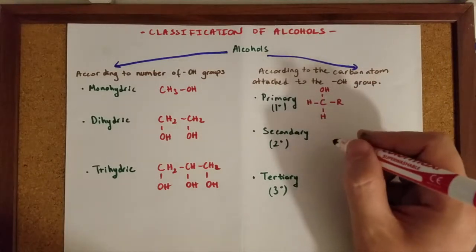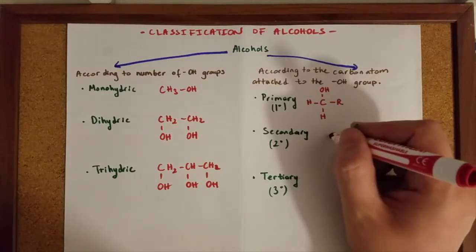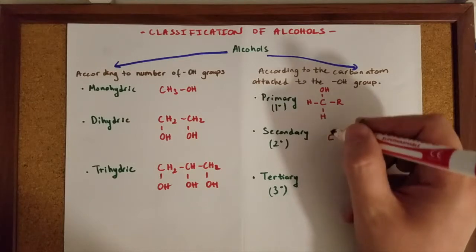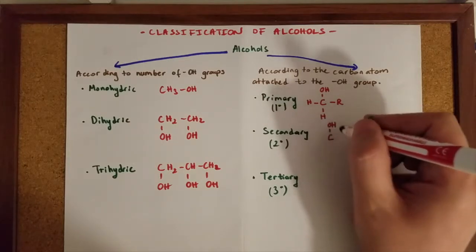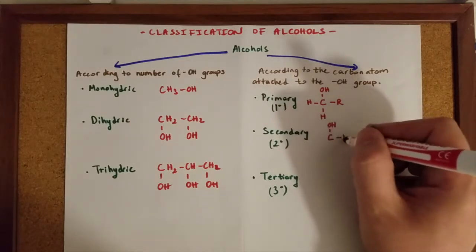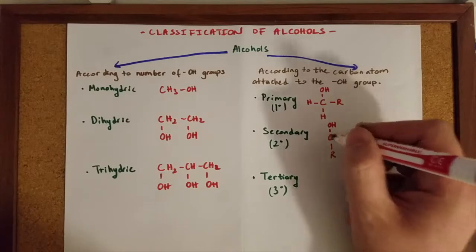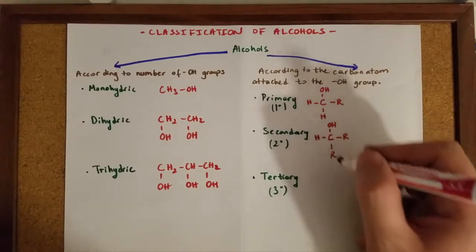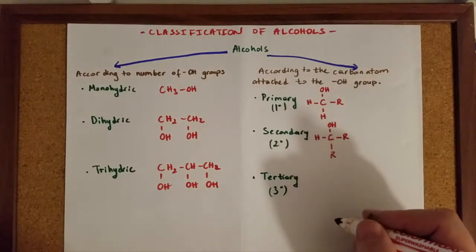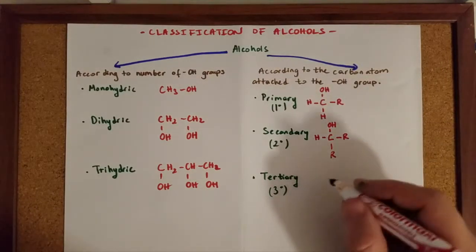However, in secondary alcohols, the carbon atom which is attached to the OH group is connected to two radicals. And the third connection is to a hydrogen atom.